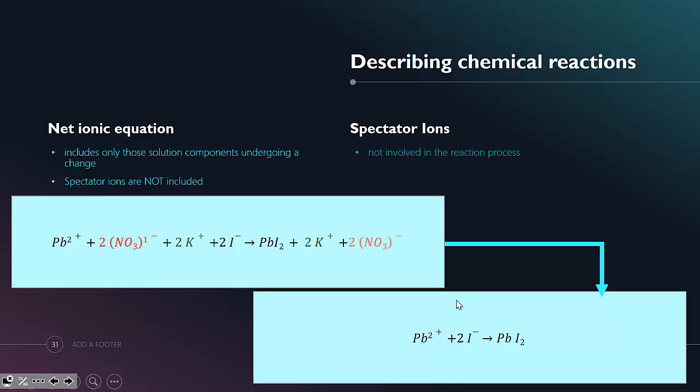So your spectator ions could be removed to give us what's known as a net ionic equation where we show the overall change, what actually happened. Where we started with aqueous ions and ended up with an insoluble salt.